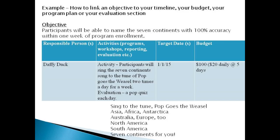In this lecture I have included an example of how to link an objective to your timeline, and also where you can include your budget and your evaluation. Using the same objective, if you look in the table you will see the responsible person, the activities, the target date, and the budget. We have Daffy Duck as the responsible person, the activity is a repeat of that objective, along with the evaluation which is a pop quiz each day. We have the target date and the budget — we've included $20 a day to pay our tutor, Daffy Duck, to work with the children in learning the song.